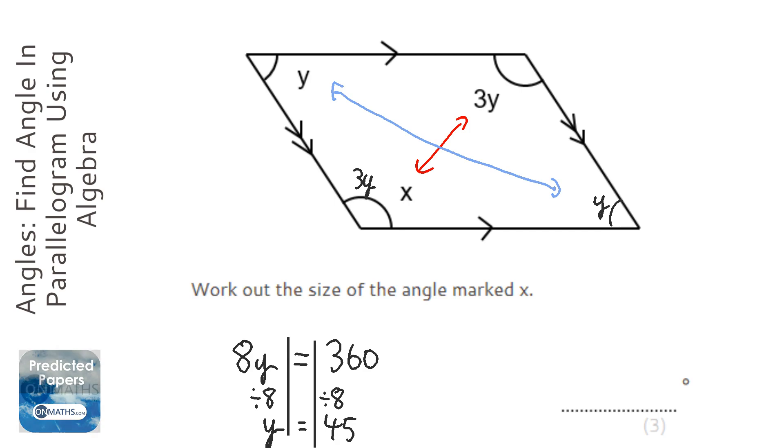But, it says here that x is 3y, so x is the same as this one here, which is 3 times that y. So, to find out what x is, we just need to do 3 times 45. Now, I know 2 times 45 is 90, so 90 plus 45 is 135 degrees. So, my answer is 135.